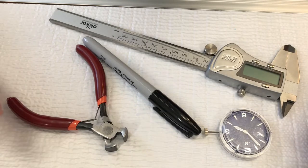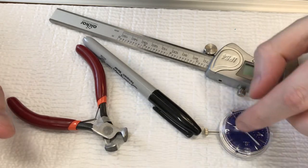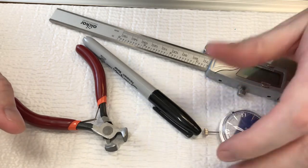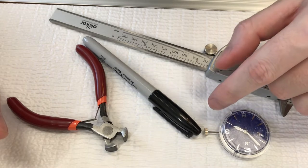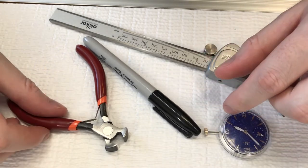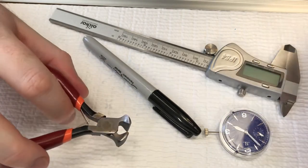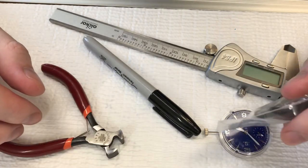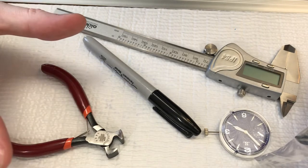All right. So the next thing I'm going to do is cut the stem. To do this job, I've got the movement with the stem in it. I'm going to take the stem out. I'm going to measure the length I need to cut with my calipers. I'll mark it with my Sharpie and then I'll use my stem cutter to cut it to size.